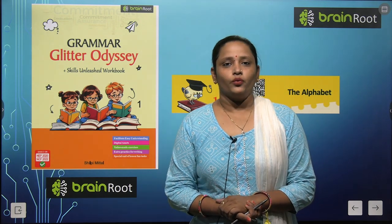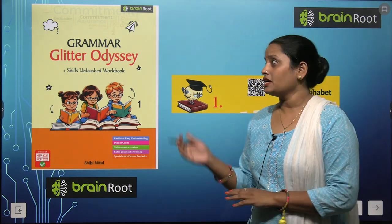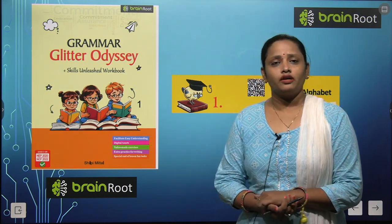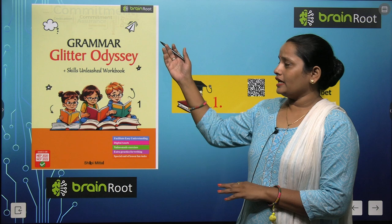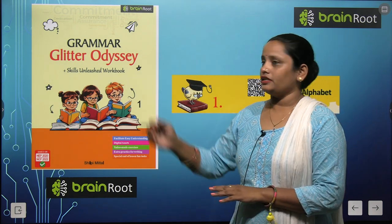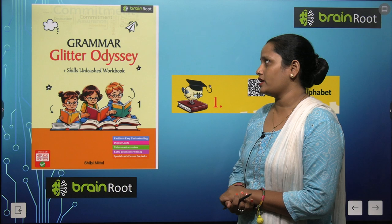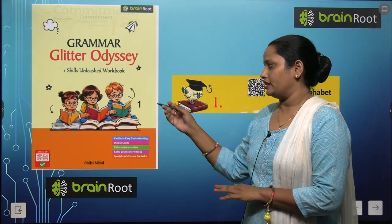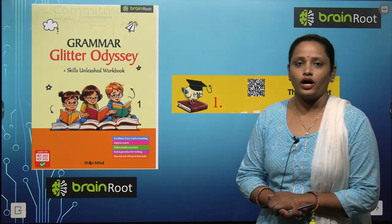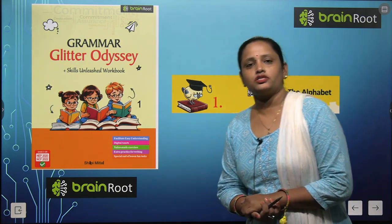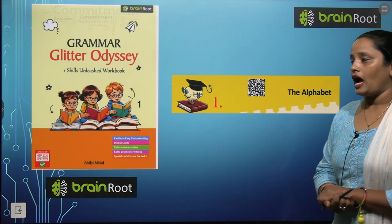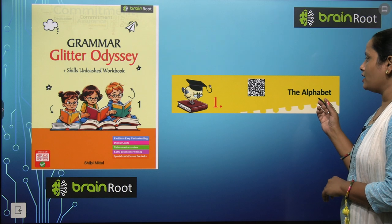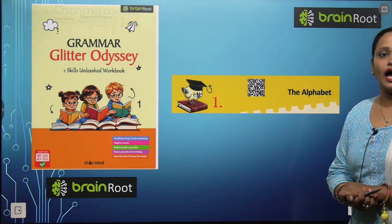Hello my dear kids, welcome back. This is Brain Root Series and I am Vandana. Today we are going to learn English grammar. Here this is a book and the name of the book is Grammar Glitter Odyssey, and this is book 1. So today we are going to start with chapter number 1, and the name of the chapter is The Alphabet.